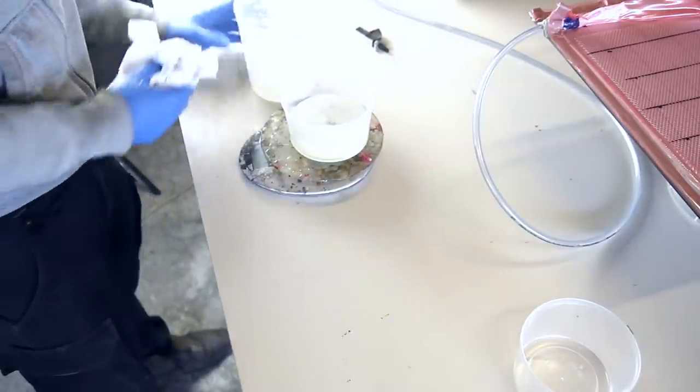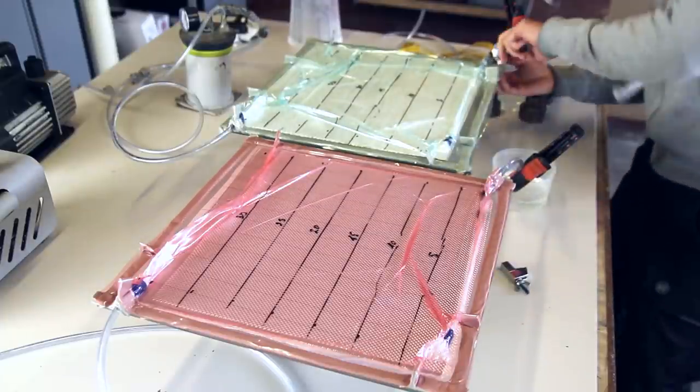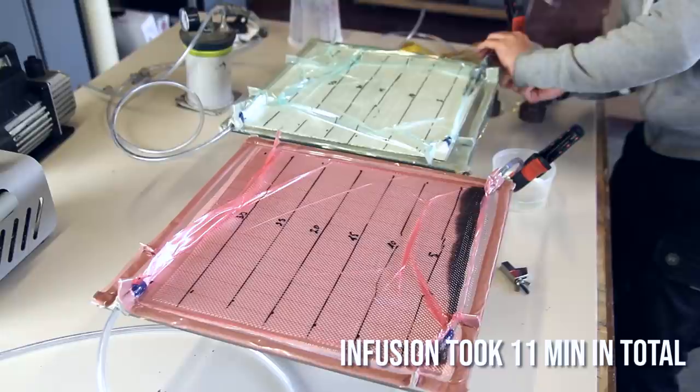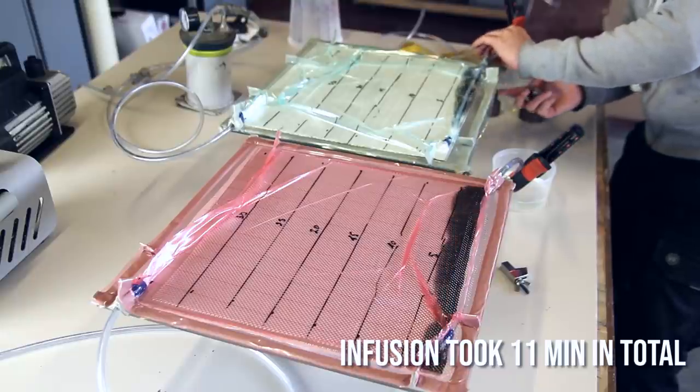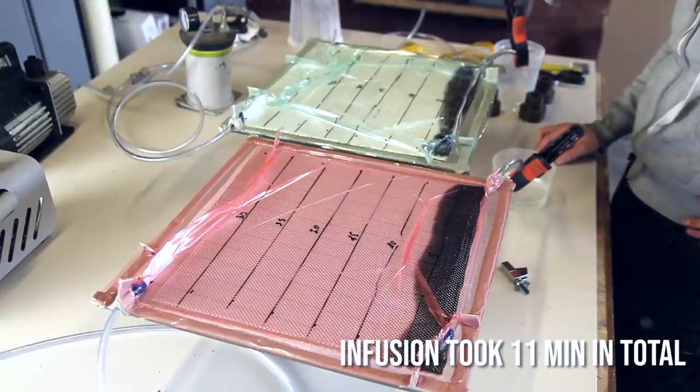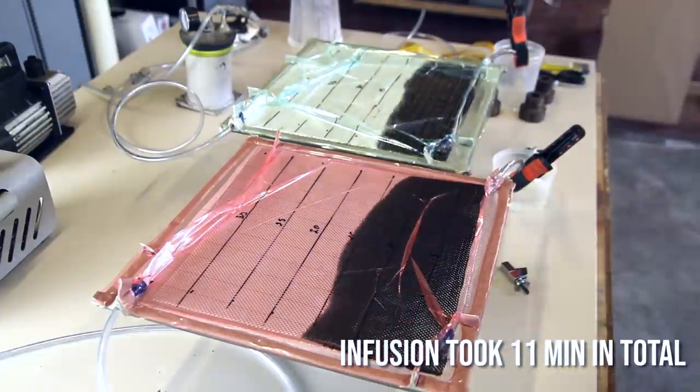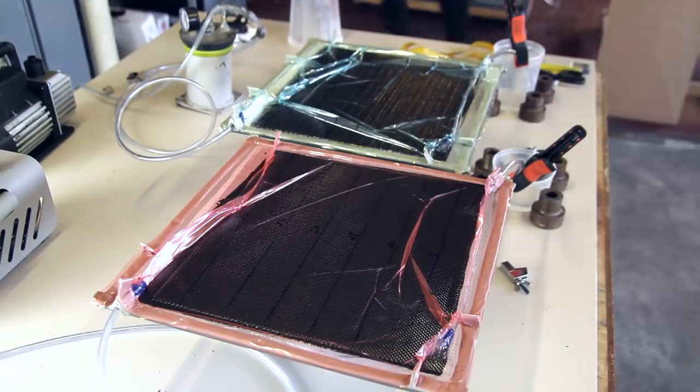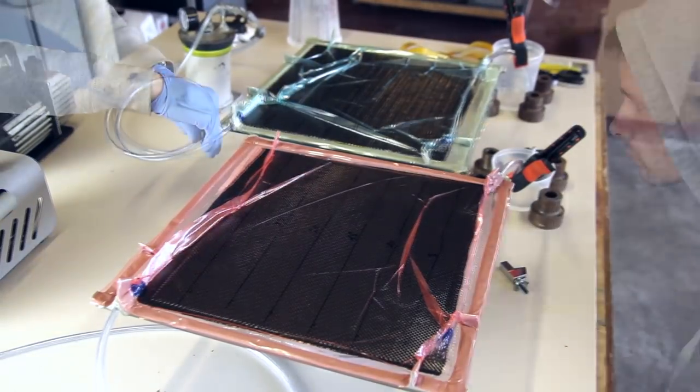Here I'm mixing the IN2 infusion resin and then you can see the infusion. I have marks every five centimeters to compare the flow speeds of both infusions. In the green bag you have the CompoFlex, and on the first part you have the regular infusion layup with the peel ply and the infusion mesh.